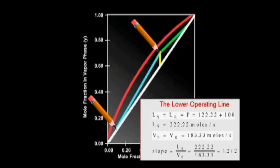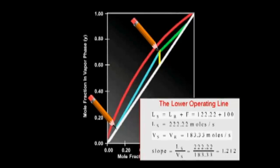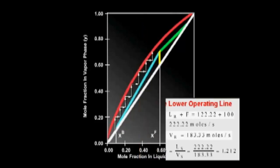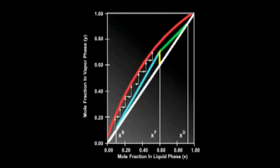With the two operating lines in place, we can step off the equilibrium stages. We start at the bottoms mole fraction on the lower operating line and step off between the operating lines and the equilibrium line. We stop once we reach the distillate mole fraction. We count off the number of stages, and the answer is 14.